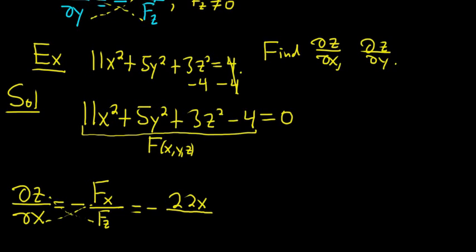Over the partial with respect to z. So everything is 0 except the stuff with the z's. So 6z. So I think we can simplify this. 2 goes into 22 eleven times. So this is negative 11x over 3z. That's it. Super easy, right?